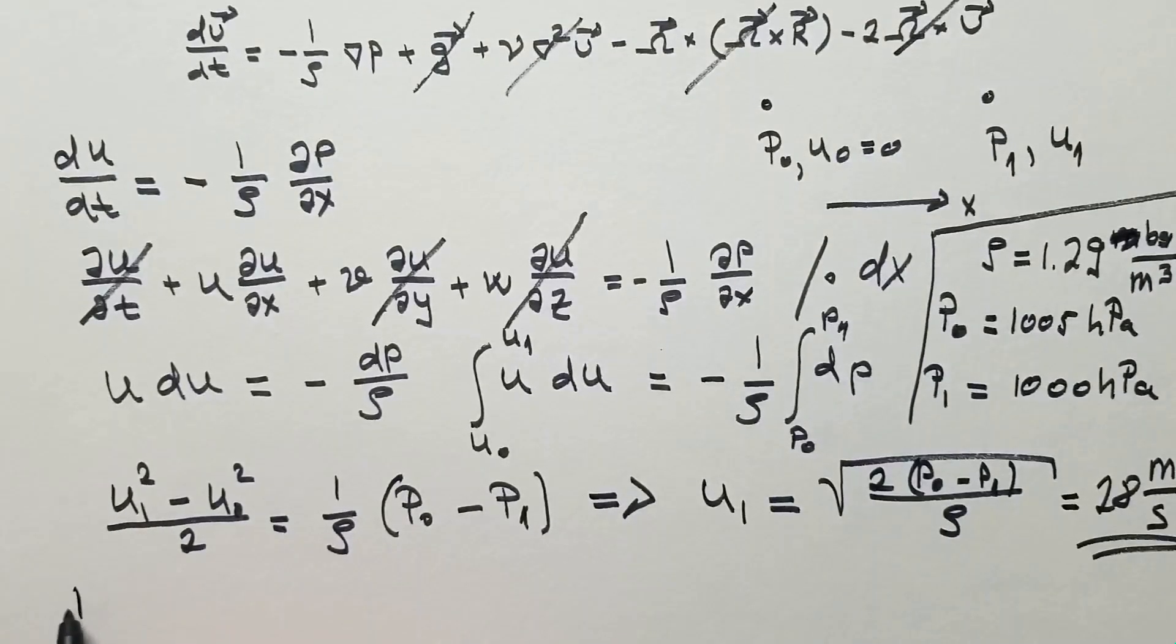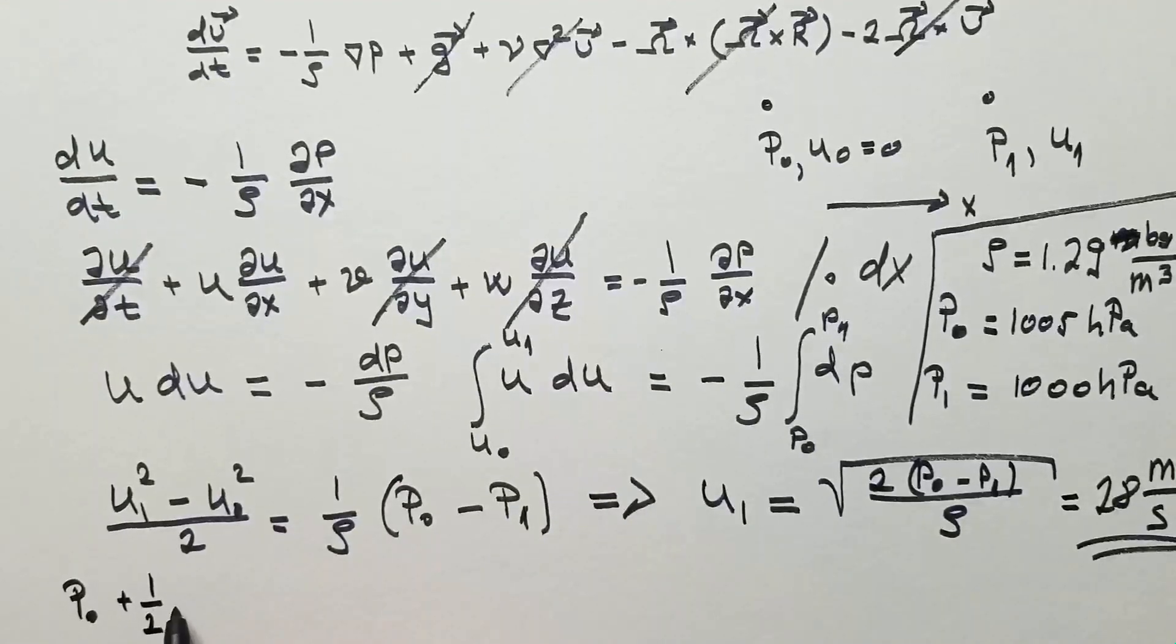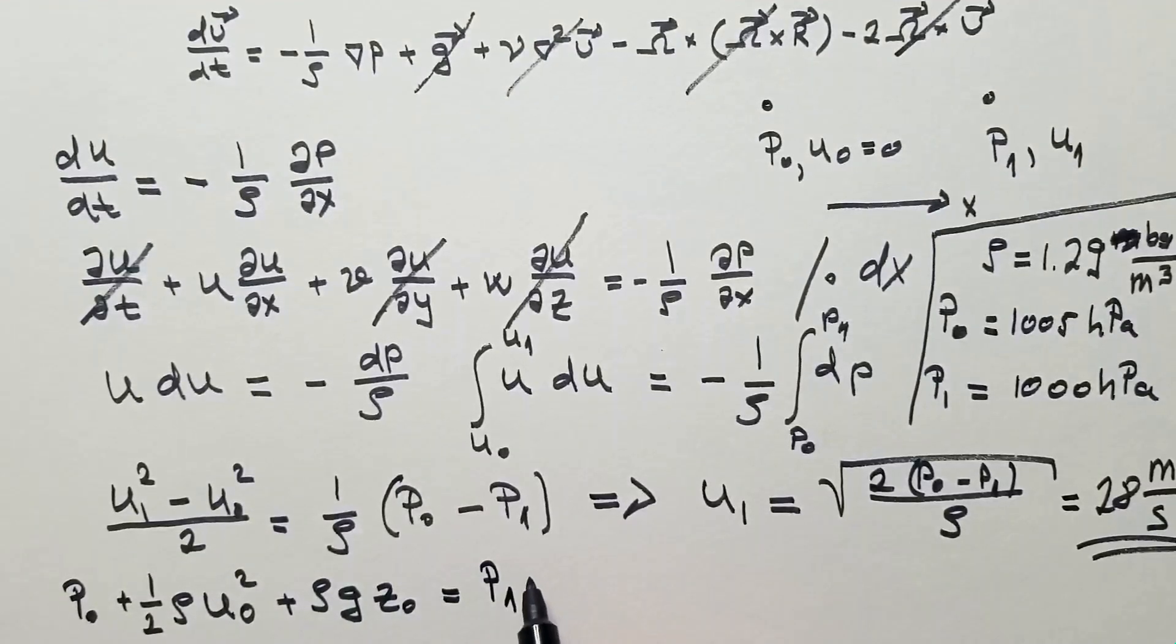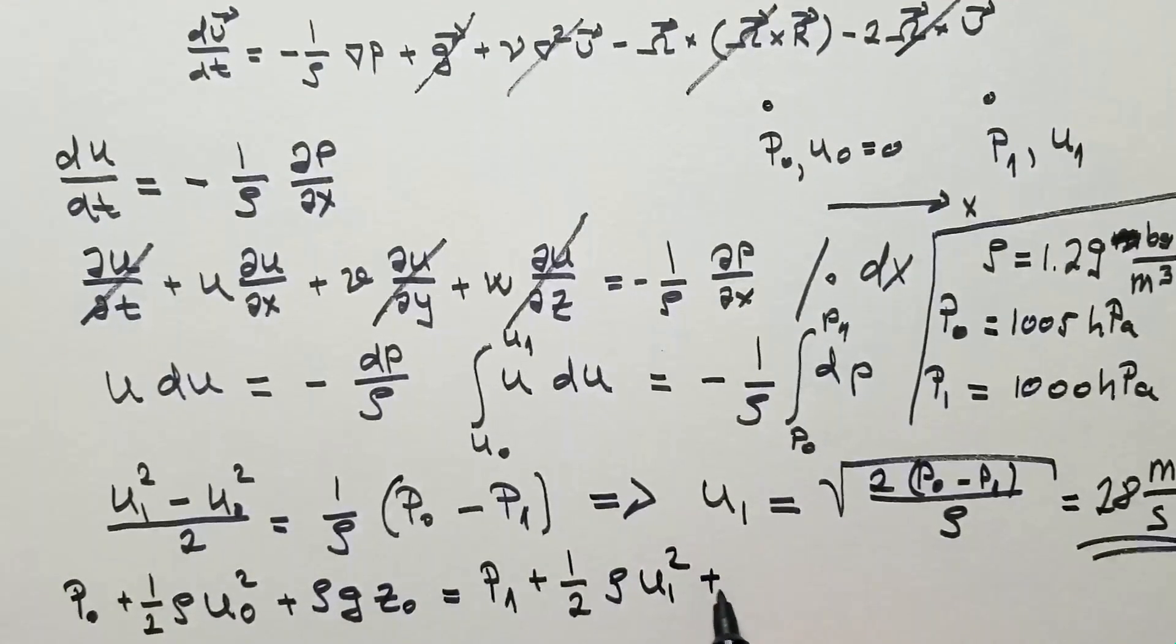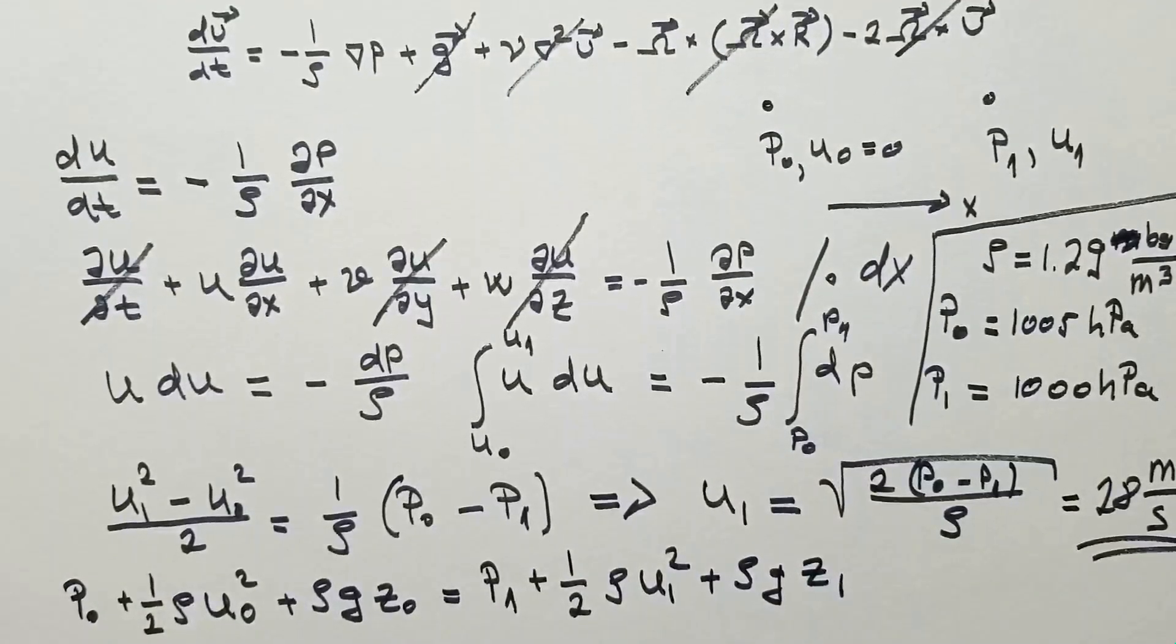Bernoulli's equation is actually a much easier way, or path rather, to take to get the same result. Let's look at it. Remember that the Bernoulli's equation was between these two points, would be p0 plus 1 half rho u0 squared plus rho g, let's say z0, z0 equals to p1 plus 1 over 2 rho u1 squared plus rho g z1. We said that z1 and z0 are the same, so this disappears.